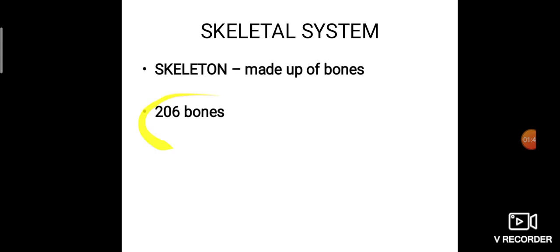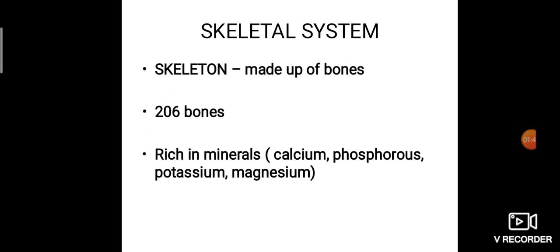There are 206 bones present in our body which form the skeleton. By birth, we have more than 300 bones, but while growing all these bones join together until we have 206 bones. These bones are rich in minerals. There are five essential nutrients for our body: vitamins, minerals, carbohydrates, proteins, and fats. Minerals play an important role in bones.